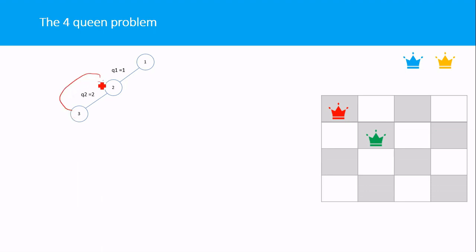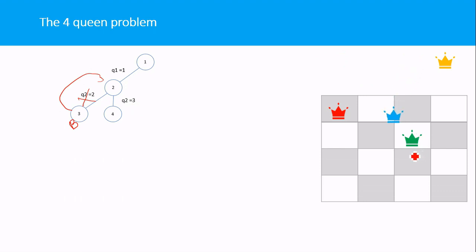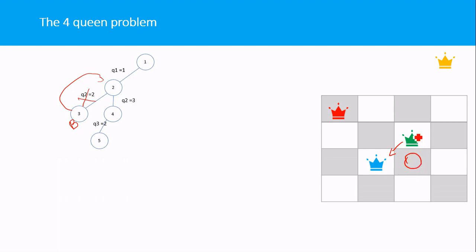Since Q2 = 2 does not lead to a solution, we backtrack to the previous step. We then try Q2 = 3 (placing Q2 in column 3), but this also does not lead to a valid solution, so we backtrack again. Next, we try Q2 = 4 (column 4) and then attempt to place Q3 in column 2 (Q3 = 2), but Q3 is in the line of attack of Q2.